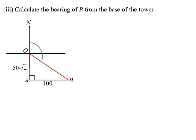So what is the bearing of B from the base of the tower? Let's draw that up. So the bearing from the tower. The compass is at the base of the tower. And we want to know the bearing of B. So angle NOB is what we're trying to find. We know OA now is 50 root 2. We know AB is 100.